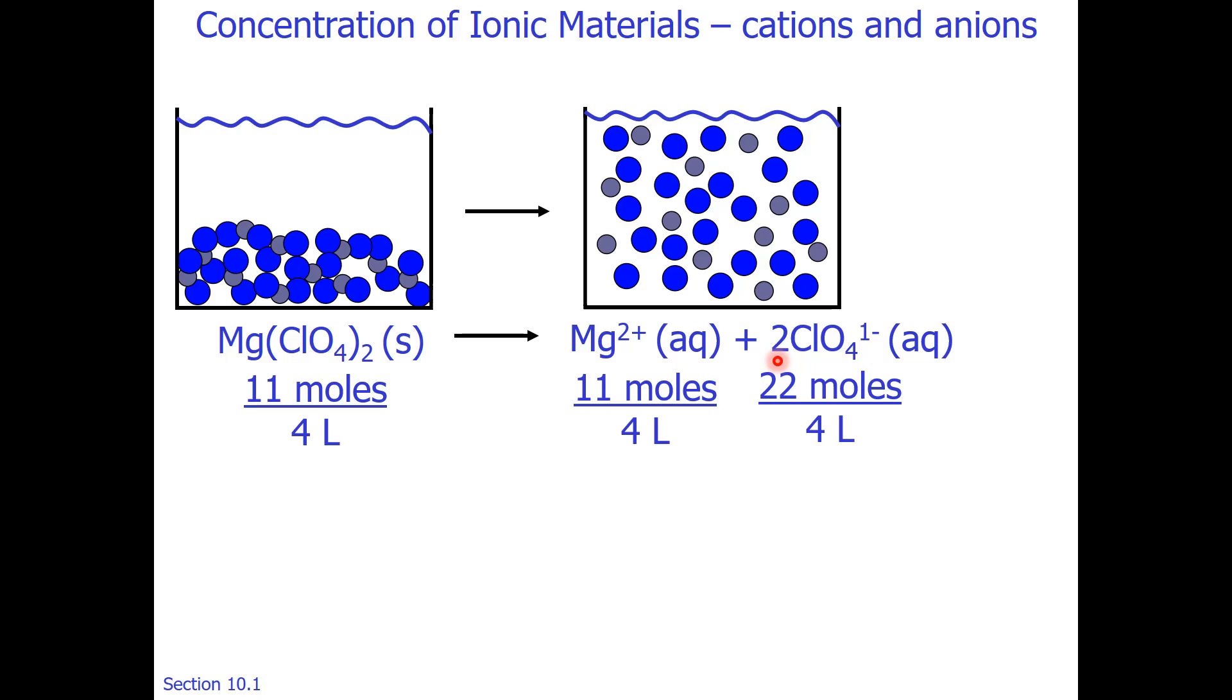The volume does not change at this level of chemistry when you dissolve something, so the bottom is still 4 liters. If I take 11 divided by 4, that winds up to be 2.75 molar magnesium perchlorate, which has separated into 2.75 molar magnesium 2 plus cation and 5.5 molar perchlorate ion.